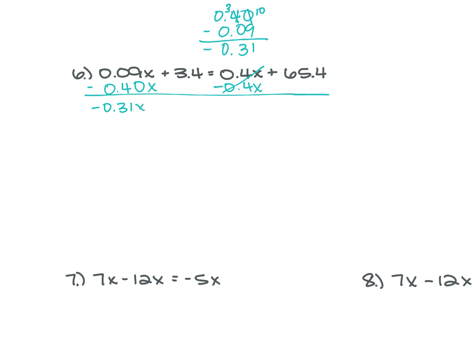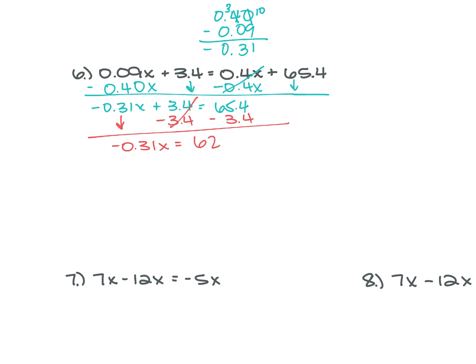Now move the 3.4 over by subtracting it from both sides. This drops down to negative 0.31X equals 62.0. The 4s give you 0; bring down the decimal point; 5 minus 3 is 2; then 6 drops down, so that's 62. From here, divide each side by negative 0.31. Bringing the negative up top, that's 6200 divided by 31. 31 goes into 62 twice, so X equals negative 200.